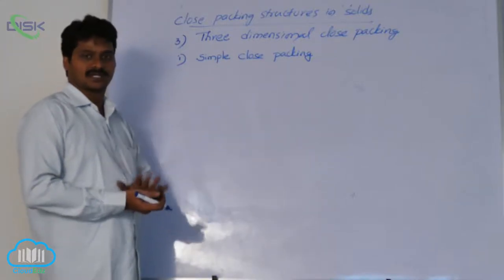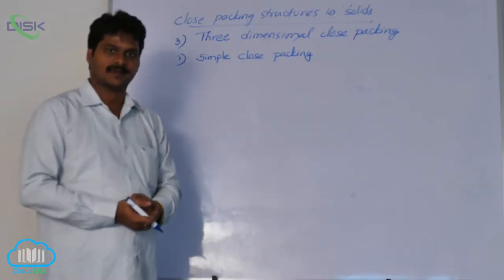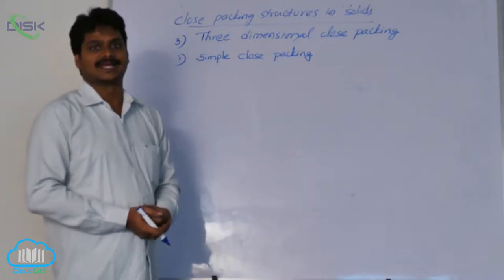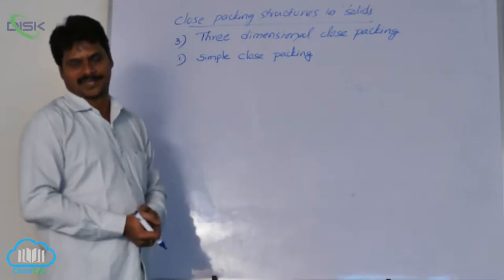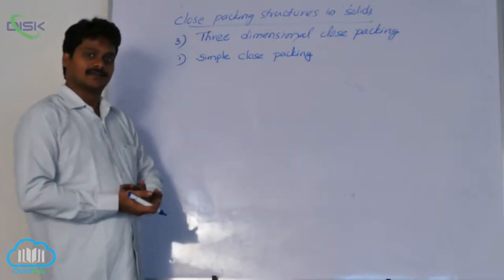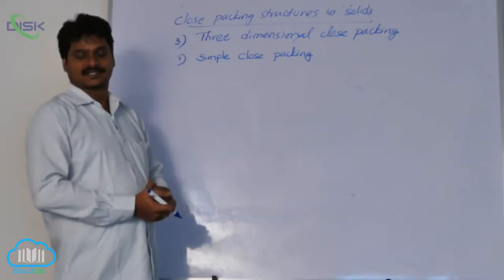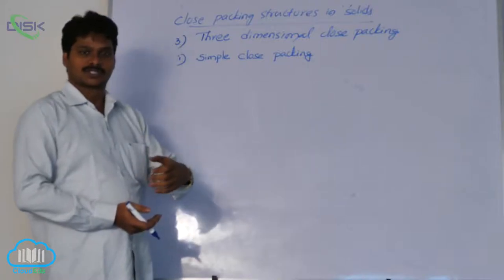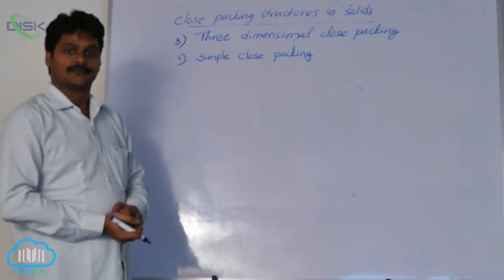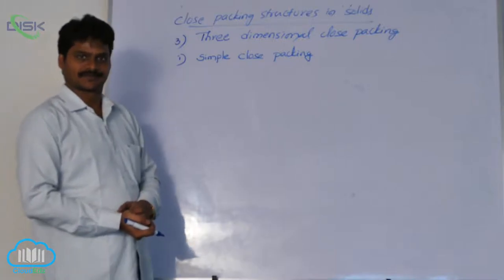In two-dimensional, we have discussed two types: one is square closed packing and the other is hexagonal closed packing. From square closed packing, we get one type of three-dimensional structure, and from hexagonal closed packing, we get a different three-dimensional structure.